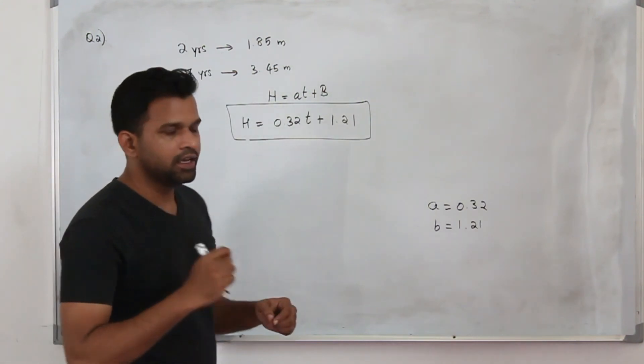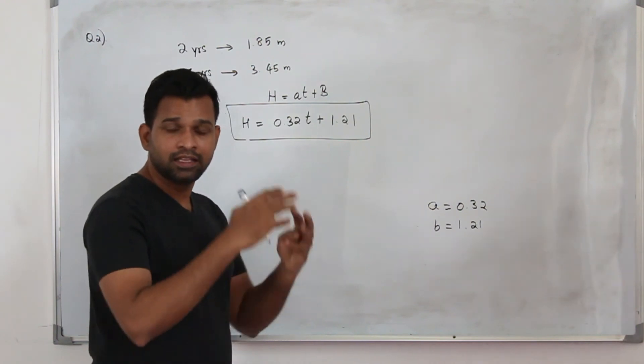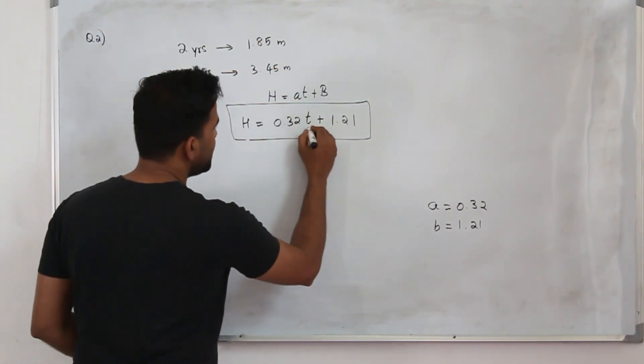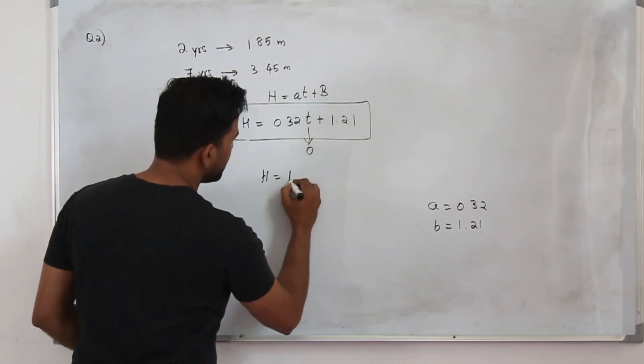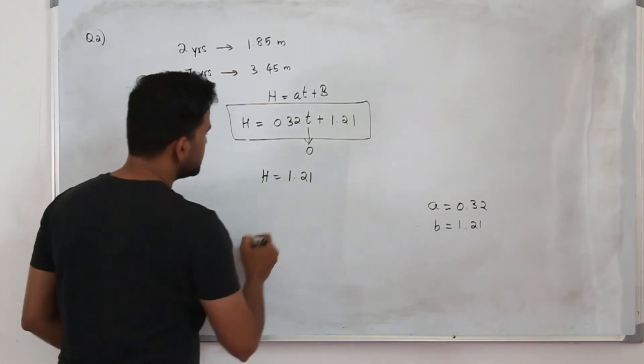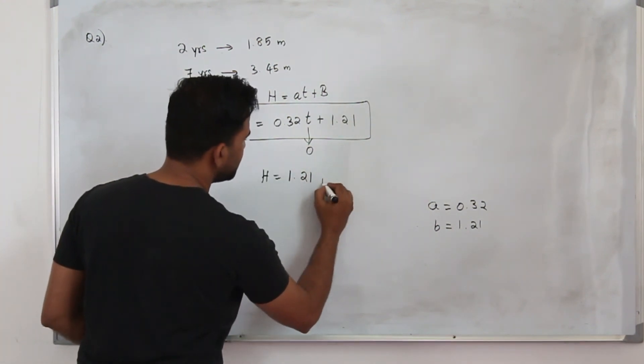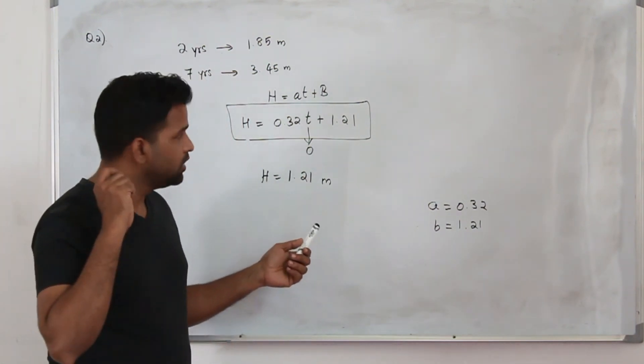Now when they say find the height when the tree was planted, the time is 0 initially, so replace t by 0 here. So your H will be 0 plus 1.21, so this is the meter measurement given. That's the height of the tree when the tree was planted.